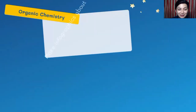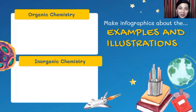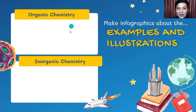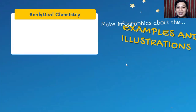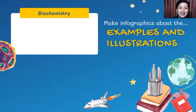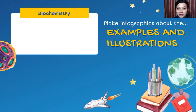For your additional task, you have to make infographics about the examples and illustrations of each branch. You will make an infographic for organic chemistry, another for inorganic chemistry, another for analytical chemistry, another for physical chemistry, and one for biochemistry. An infographic is a combination of pictures, tables, and other graphic or visual materials, along with data or information, all in one.